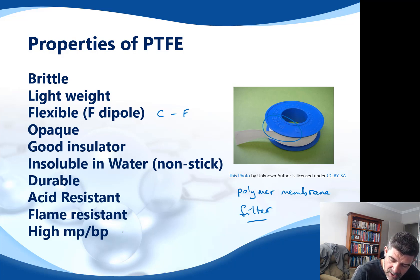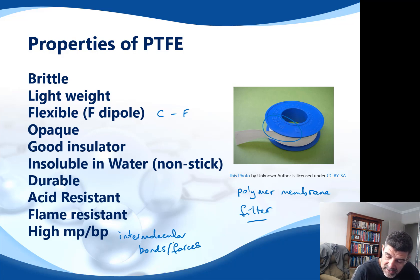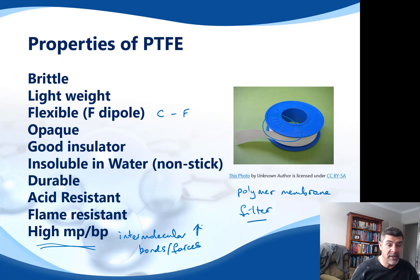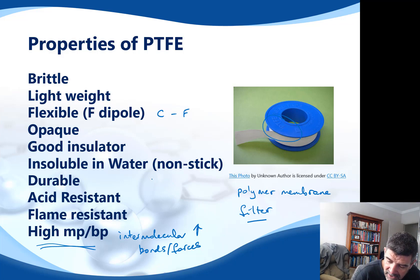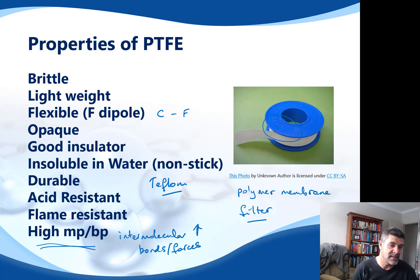The intermolecular forces — rather than bonds — are what affect the melting and boiling point. When the strength of these forces goes up, so does the melting and boiling point. PTFE is also a fairly durable polymer, and hopefully you're starting to see some consistent properties coming through. One interesting application of PTFE is a particular surface known as Teflon, which is used for non-stick cookware like frying pans.